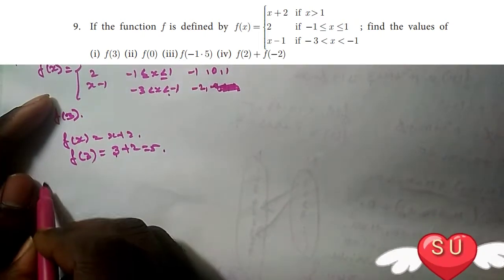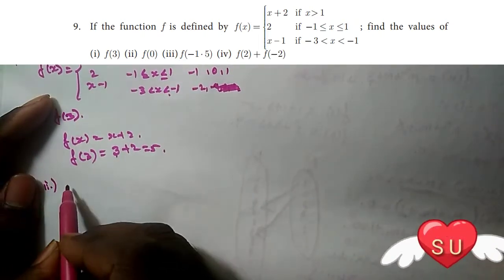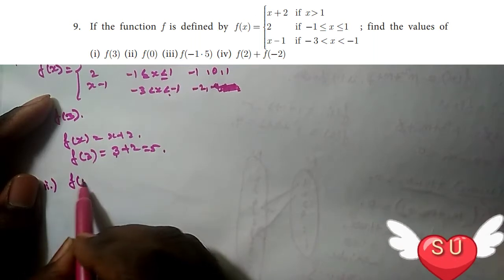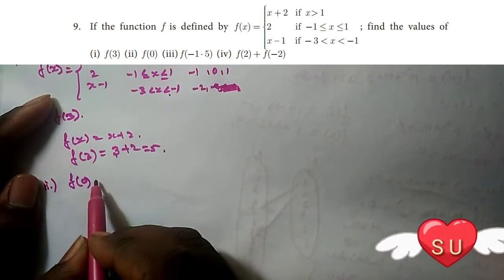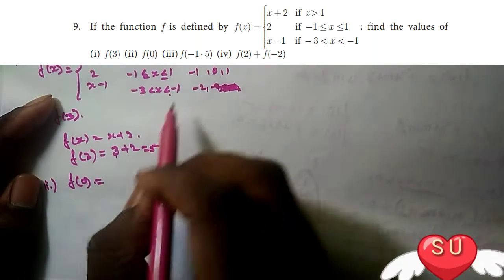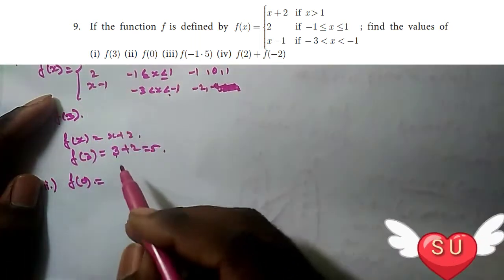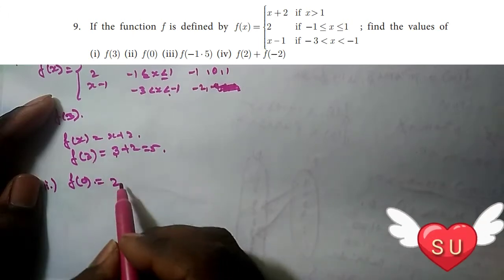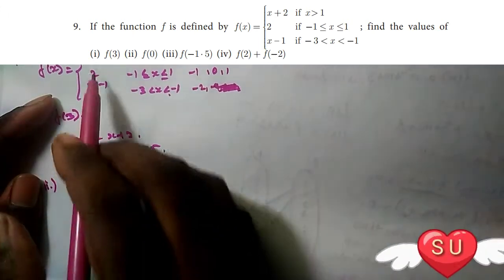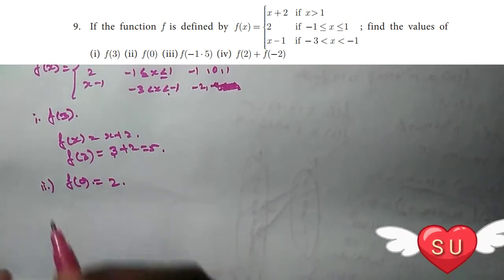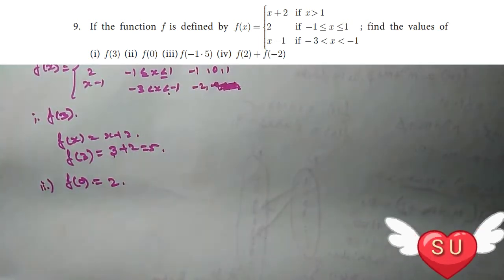Second question: find f(0). Since 0 falls in the range minus 1 less than or equal to x less than or equal to 1, we use f(x) = 2. Therefore f(0) = 2.